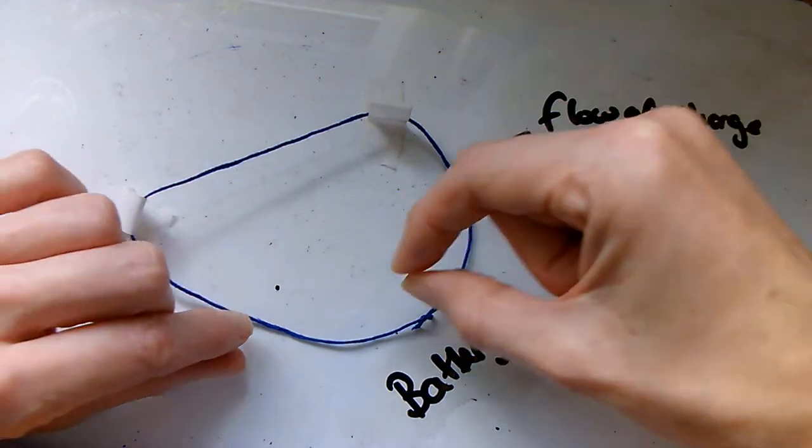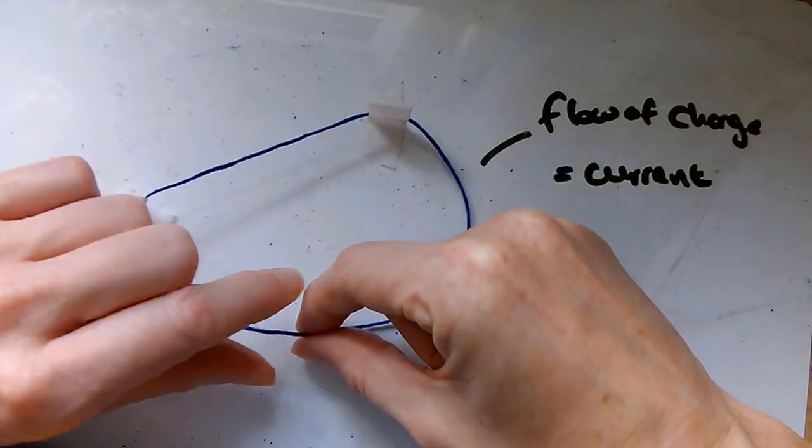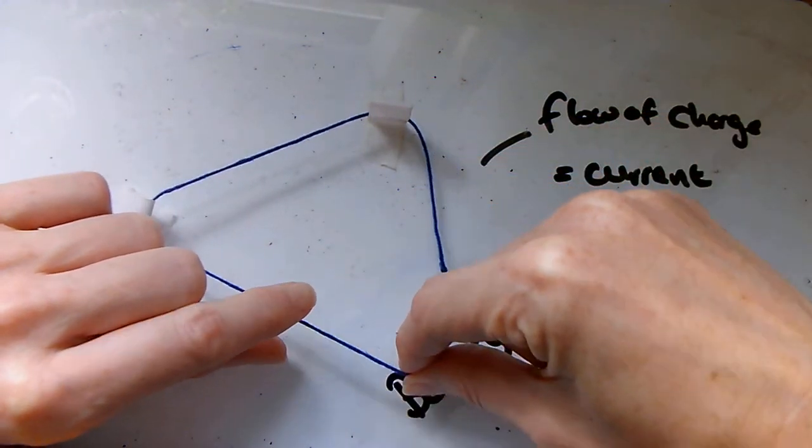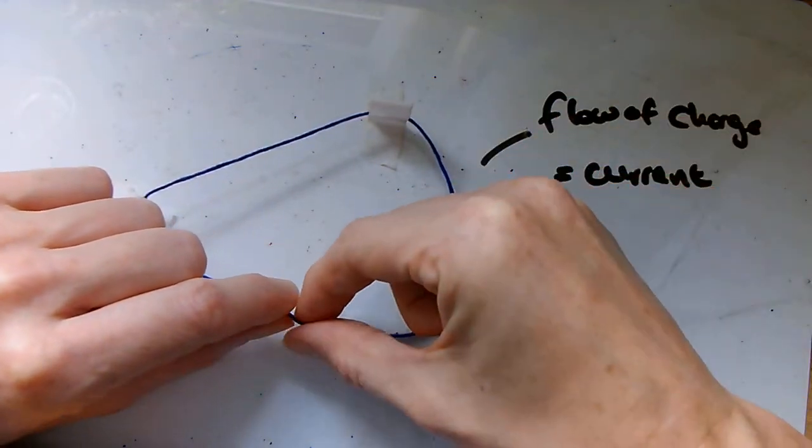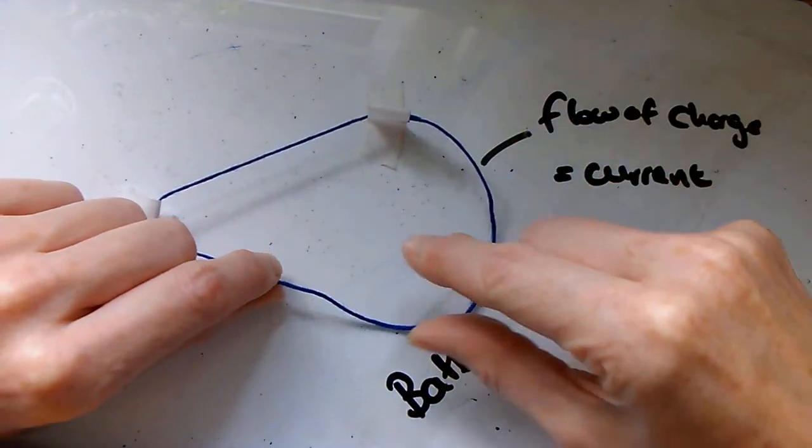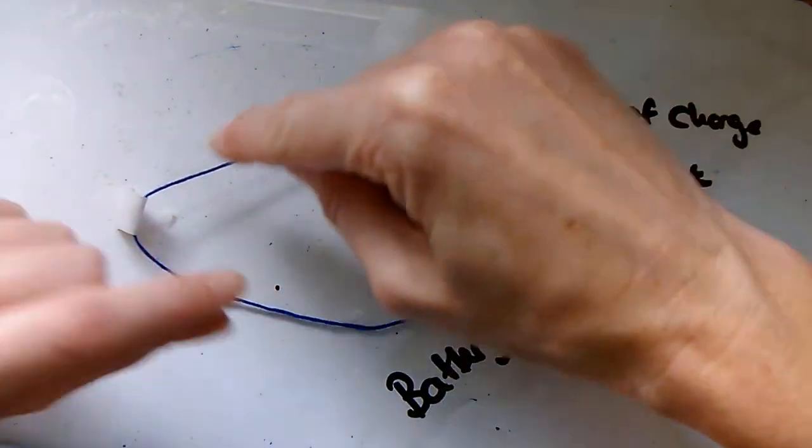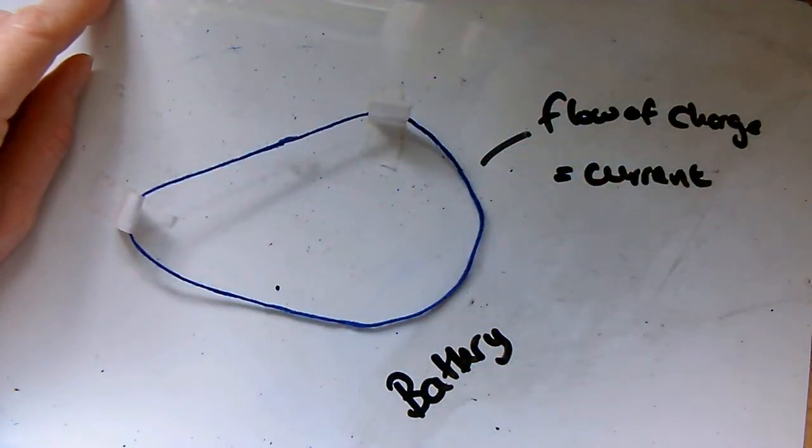If we imagine that the battery's off, and then I start it again, you can see there's a loop, that the charge flows in every part of the circuit at the same time.